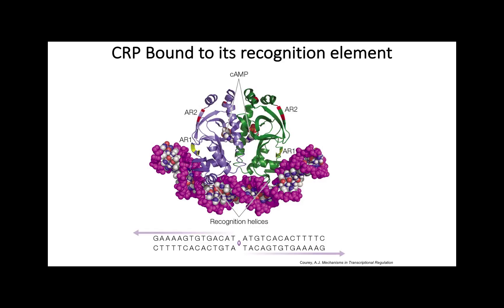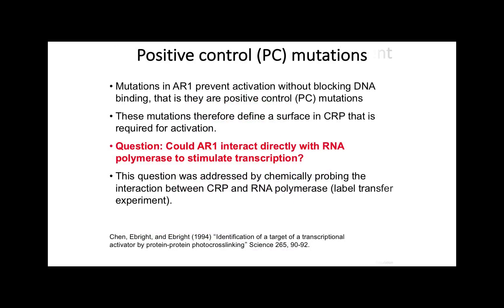Highlighted in different colors, we see a total of four regions — two on each subunit — that function as activation regions. In yellow we see AR1, activation region 1, and in red we see AR2, activation region 2. These were defined by genetic analysis. Scientists heavily mutagenized CRP and looked for mutations that prevented activation without preventing binding to DNA. We call such mutations positive control mutations. Mutations in AR1 prevent activation without blocking DNA binding, thereby defining a surface in CRP required for activation.